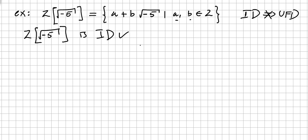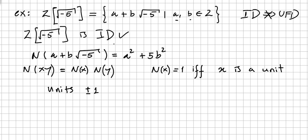Now let's see if this ring is a unique factorization domain. Any element in this ring will be mapped by the norm function N to a² + 5b². Please check a previous video for this. This is the norm function, and we use the letter N because this is the norm.